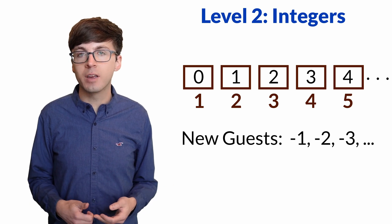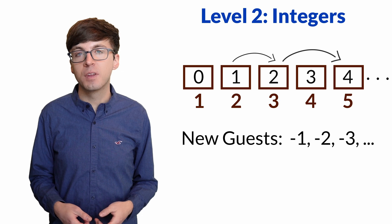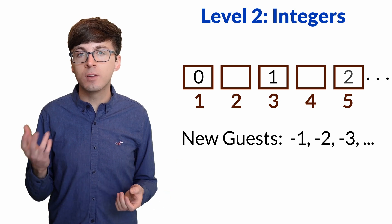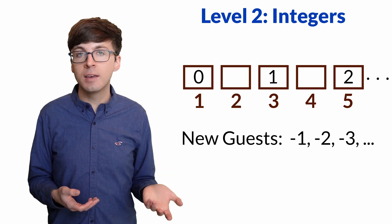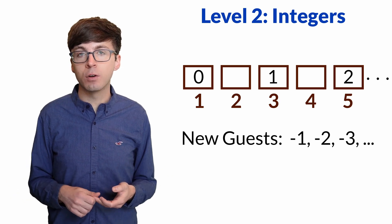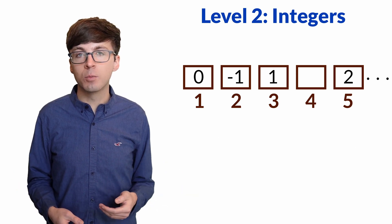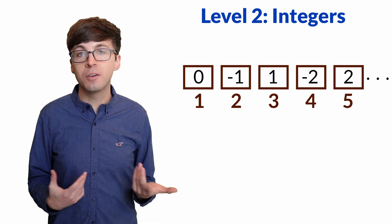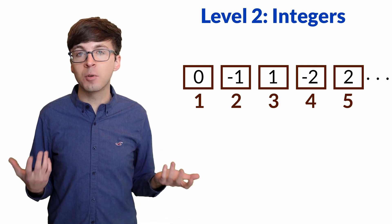Here's one way to accommodate all of the guests. Let's tell all current guests to spread out so that they use only the odd-numbered rooms. Zero can stay in room one, one can stay in room three, two can stay in room five, and so on — number n is now staying in room 2n plus one. But now we have infinitely many free even-numbered rooms, so the negative integers can stay there: negative one in room two, negative two in room four, and so on. All of the integers are accommodated, and we've shown that the integers and the non-negative integers have the same cardinality.